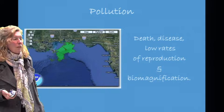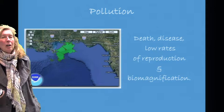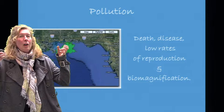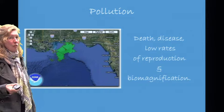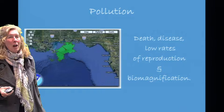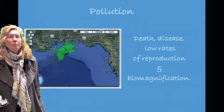With pollution, death, disease, low rates of reproduction, and biomagnification are often seen — biomagnification being where toxins run up the food chain. This satellite image shows the Gulf of Mexico and the oil spill that occurred a few years back; they are still feeling ramifications from that spill.